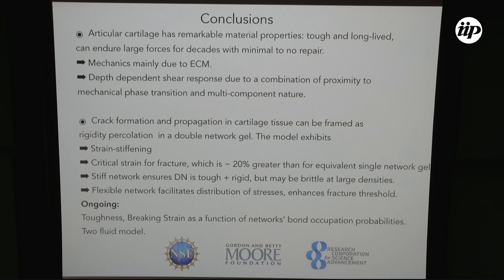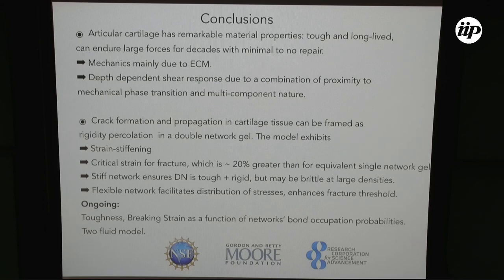Ongoing work includes a more detailed study looking at toughness — the area under the stress-strain curve — as a function of the volume fractions and bond occupation probabilities for the two networks, and the breaking strain. The next idea would be to include water in the model, which we completely ignored in this model because we focused on mechanics and our timescales were well separated from poroelastic relaxation times. But in real life there is water, and if you're compressing, you can't really ignore it. So ongoing work includes doing a two-fluid kind of model — where we have two networks and a fluid — which is what we are trying to do currently. With that, I will thank my sources of funding and take any questions you have. Thank you.